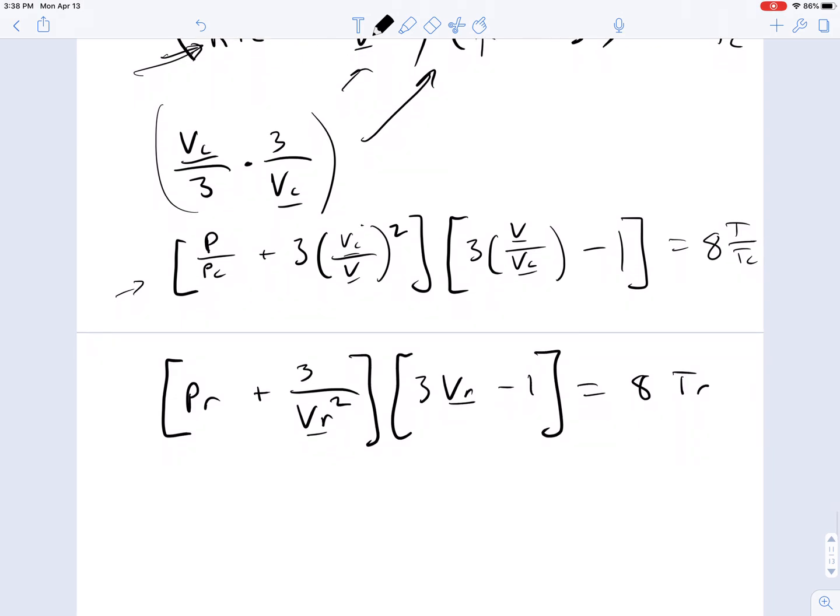So with TC, PC, and VC, the critical point on your original graph now occurs at TR, PR, VR equals 1 and shifts the critical point.